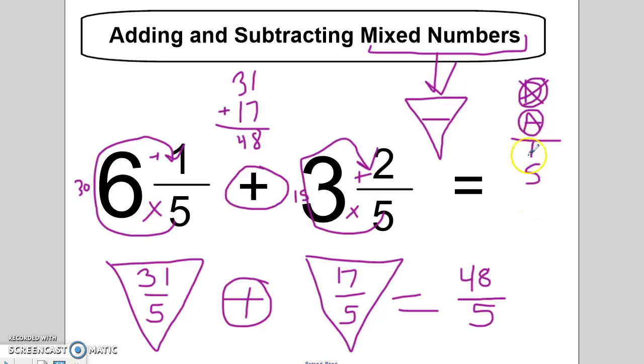But then of course, we know that the last two parts in the IS checklist is to really decide, is this the best way to say 48 fifths? So the first thing I'm going to ask myself is improper. And I noticed that 48 fifths is an improper fraction.